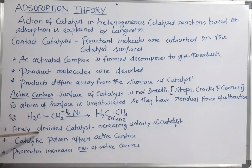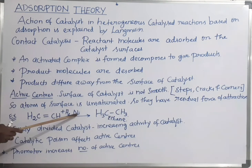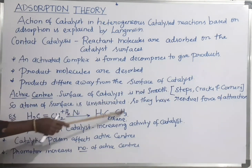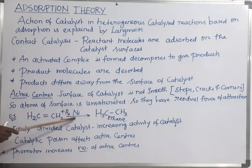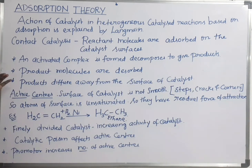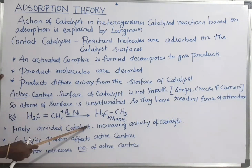Let us see the example in adsorption theory — that is, hydrogenation of ethylene in the presence of nickel catalyst, giving the product ethane. The nickel catalyst is taken in the finely divided form, meaning powder form. When the catalyst is taken in the finely divided form, the surface area of the catalyst becomes larger, so the number of active centers increases.